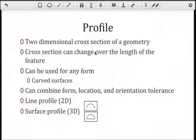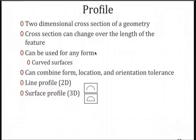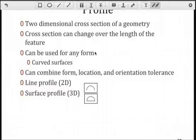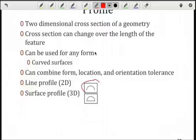We can have a two-dimensional or three-dimensional profile tolerance, and that's based upon which symbol. You should recognize these two symbols. The simple curve would be two-dimensional. The closed curve would be three-dimensional, covering the entire surface.